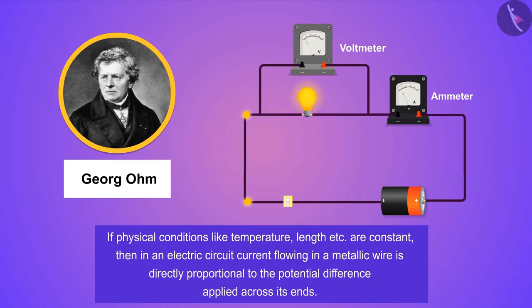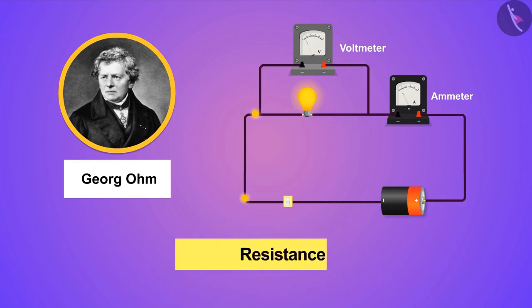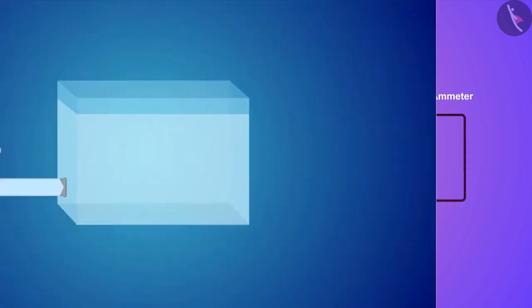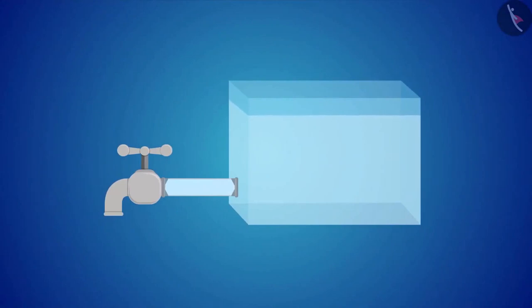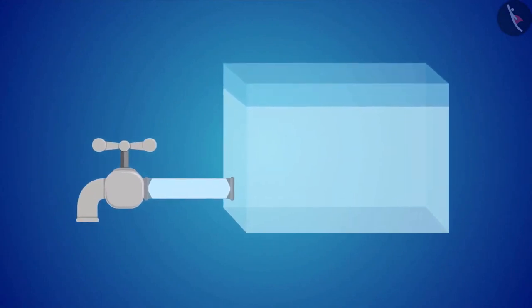So the question arises, in what ratio does electric current increase and decrease? Ohm named this ratio as resistance. But what is this resistance? Do you remember that water tank analogy from the last video? Here we use that analogy to understand this concept.